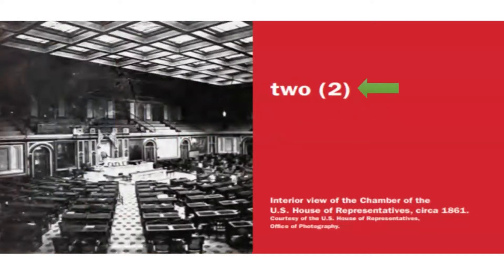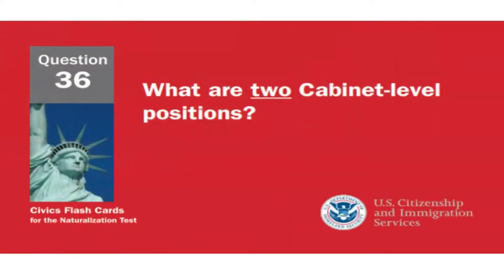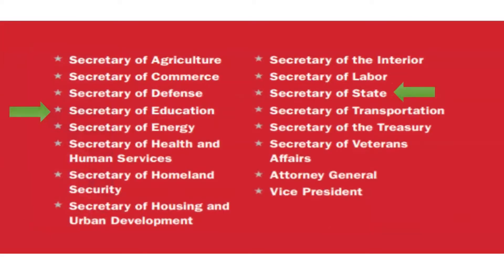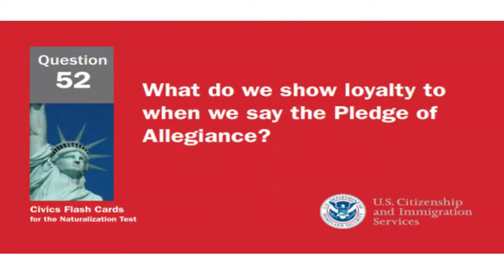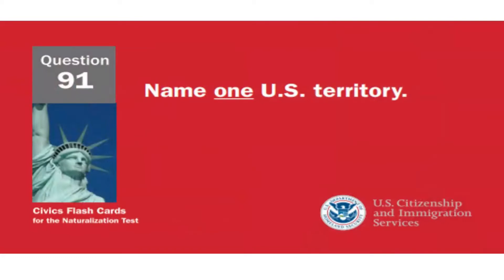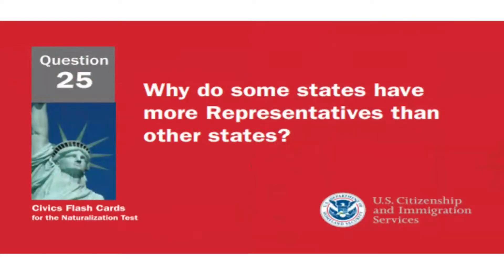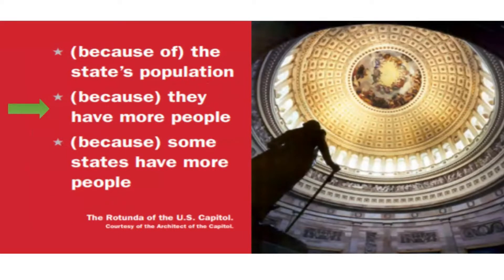We elect a U.S. Representative for how many years? Two years. Who does a U.S. Senator represent? All people of the state. What are two cabinet-level positions? Secretary of State and Secretary of Education. What do we show loyalty to when we say the Pledge of Allegiance? The United States. Name one U.S. territory. Puerto Rico.